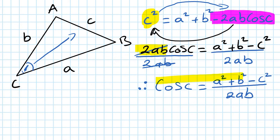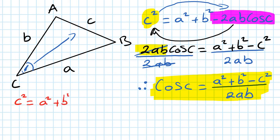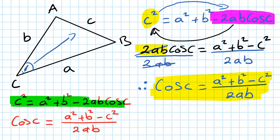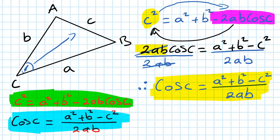Now, to find angles, this is called the secondary equation — the primary is the top one. So to find the side length: c squared equals a squared plus b squared minus 2AB cos C. And to find any angle: cos C equals a squared plus b squared minus c squared, all over 2AB. So that's the formula.